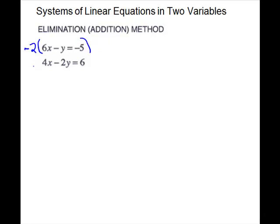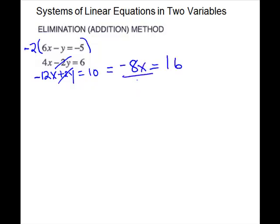I'm going to write it down below. So I have negative 12x plus 2y equals positive 10. Now I'll work with these two equations, and my y's will cancel when I add them together. So I have negative 8x equals 16. Divide by negative 8.